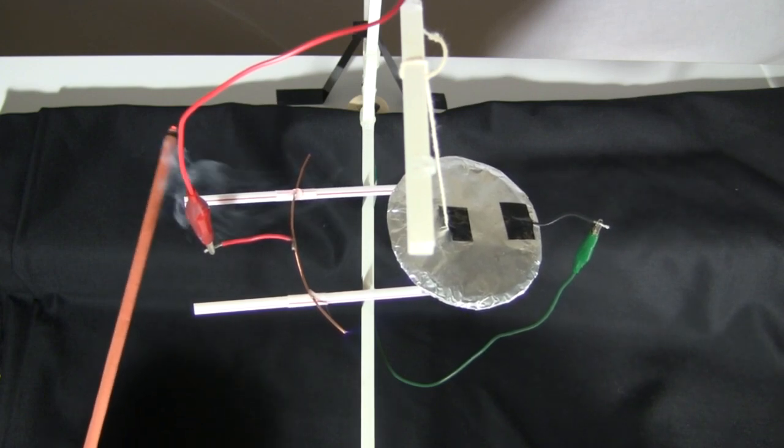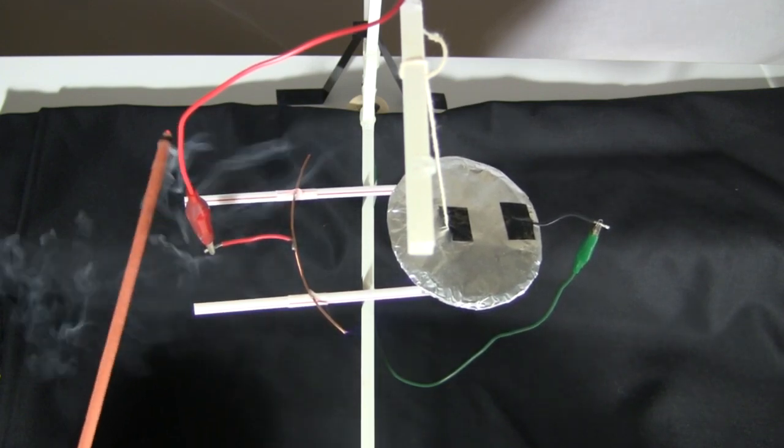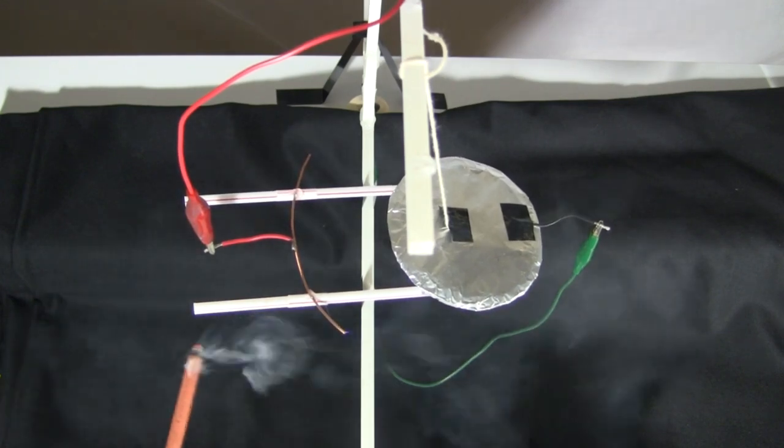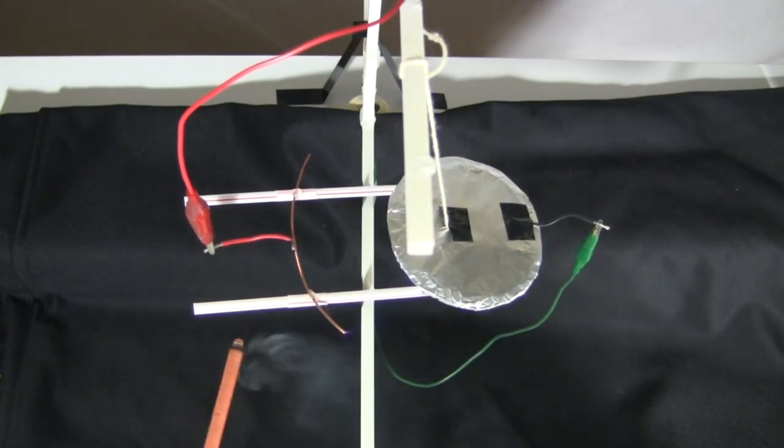It's that corona that's the source of the ion wind that propels these ionocrafts. And it's possible to see where that ion wind is going. Here I'm doing what's called a smoke test, using an incense stick. The air is clearly moving in the opposite direction that the ionocraft would be. If it weren't prevented from moving, that is.